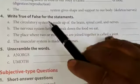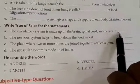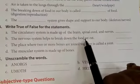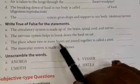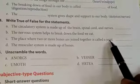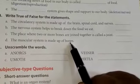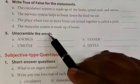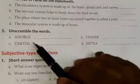The circulatory system is made up of the brain and spinal cord — correction: the nervous system is made up of the brain, spinal cord, and nerves. The place where two or more bones are joined together is called a joint. Unscramble the words: organs, nerves, mouth, heart.